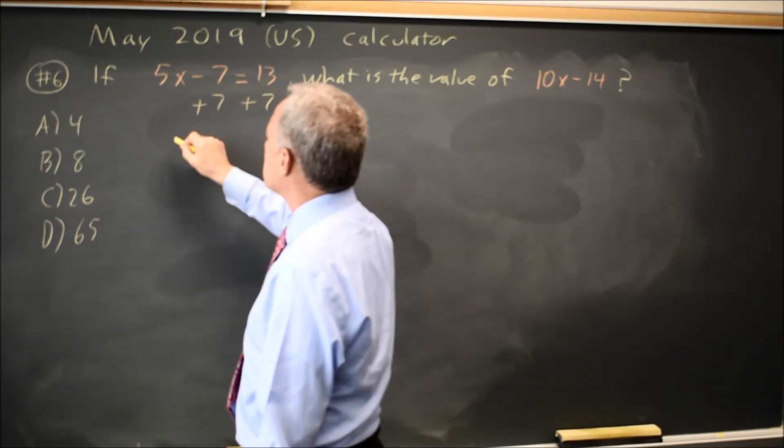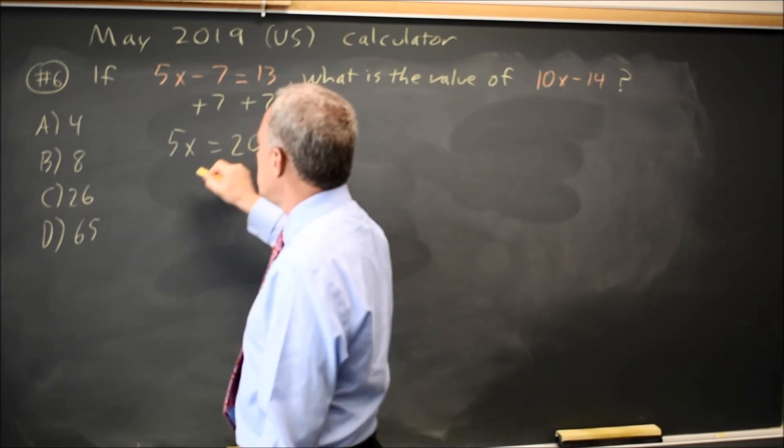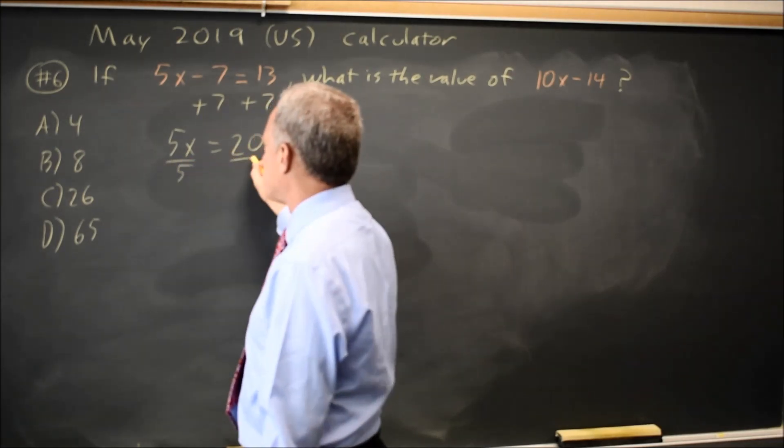So let's add 7 to both sides, leaving 5x on the left equals 13 plus 7 is 20. To get x by itself, I'm going to divide both sides by 5.